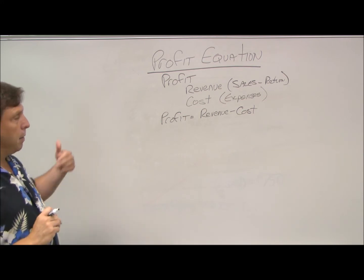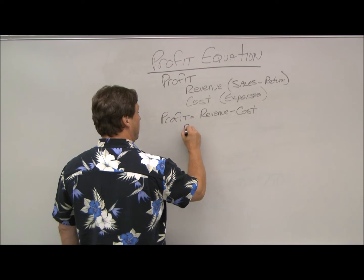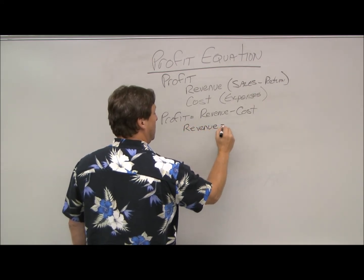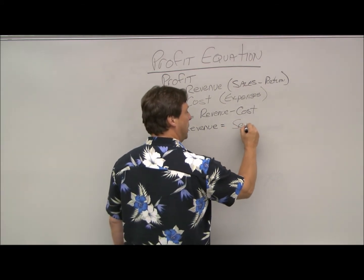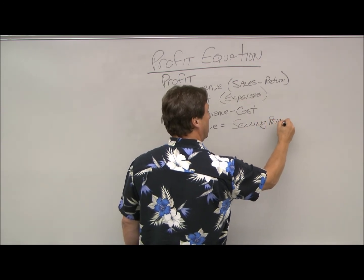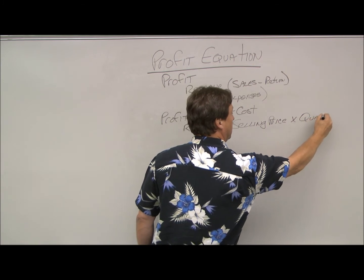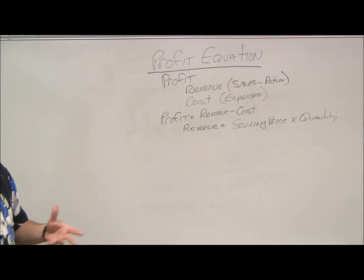Now, if we can break this down further, we can see that revenue is basically the selling price of whatever we're selling times the quantity. We add up everything we sell, how much it's sold for, we get our revenue.